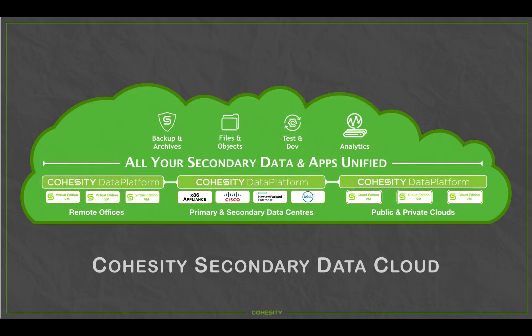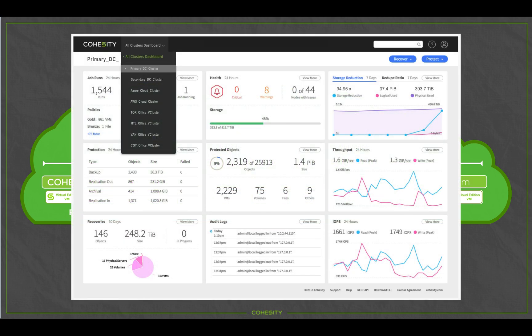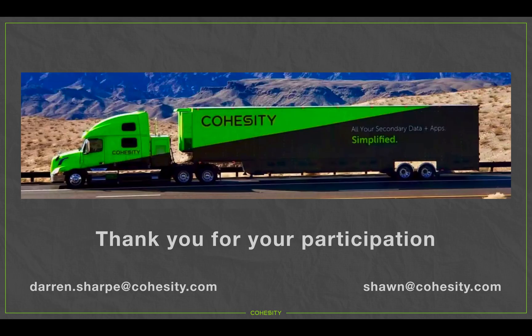That really is the concept of what Cohesity is — a secondary data cloud. All your secondary data and apps unified across the entire ecosystem, all managed from a single UI. Coming back full circle, the key aspect and one of the most important features of Cohesity is our simplicity. Thank you very much for your patience today, and if you want to find out more information, please don't hesitate to reach out or go directly to Cohesity.com.